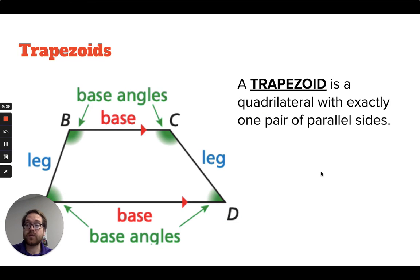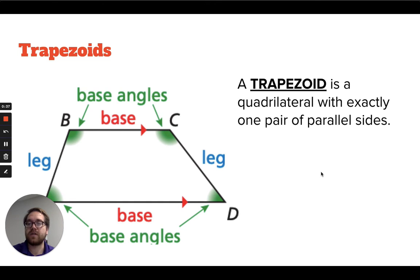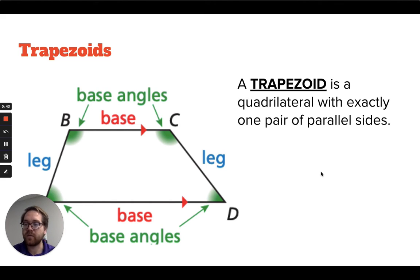The first one is a trapezoid — something you've probably seen before and probably worked with a little bit before, but we want to clarify its properties and make sure we can use those to understand something about their angles and their side lengths. A trapezoid, by definition, is a quadrilateral with exactly one pair of parallel sides.